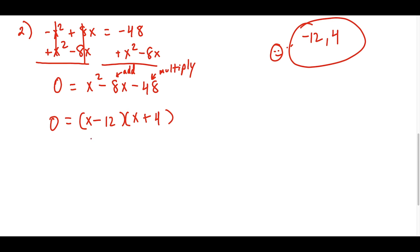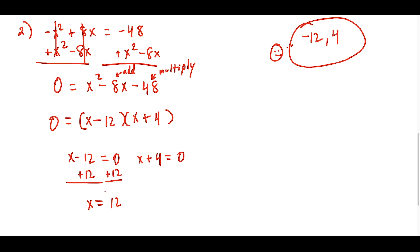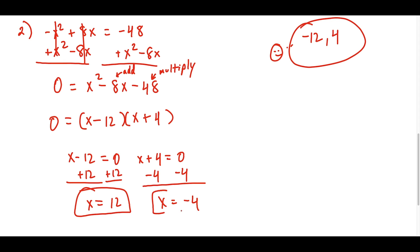Now we set each factor equal to zero: x - 12 = 0 gives x = 12, and x + 4 = 0 gives x = -4. So our two solutions are x = 12 and x = -4.